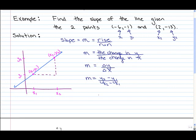Substituting our information, our slope would simply be negative 13 minus negative 1 divided by 2 minus negative 6.